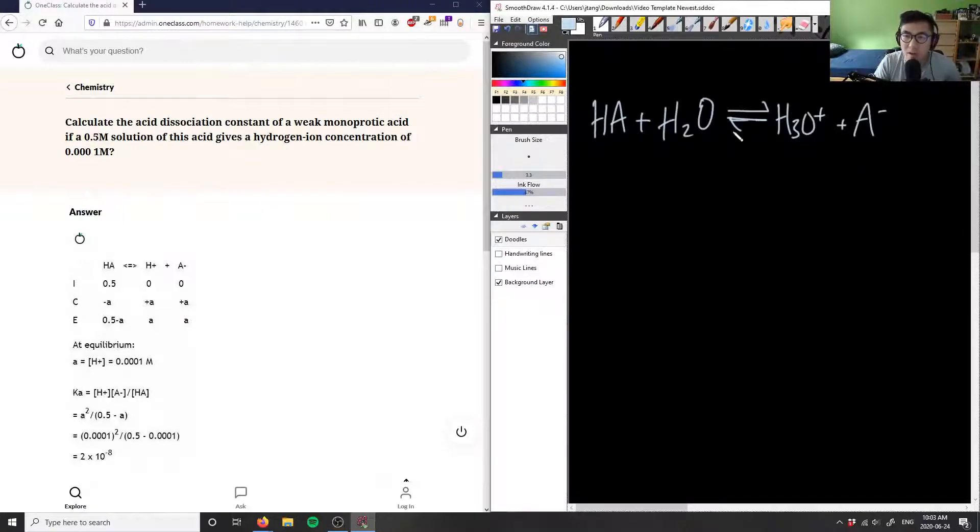So this here is my formal chemical equation. I have HA as the weak monoprotic acid, it's in water as a solution. I'm going to give up one of these hydrogens to the water to make hydronium ions, which is H3O+, and then I have A- as my conjugate base.